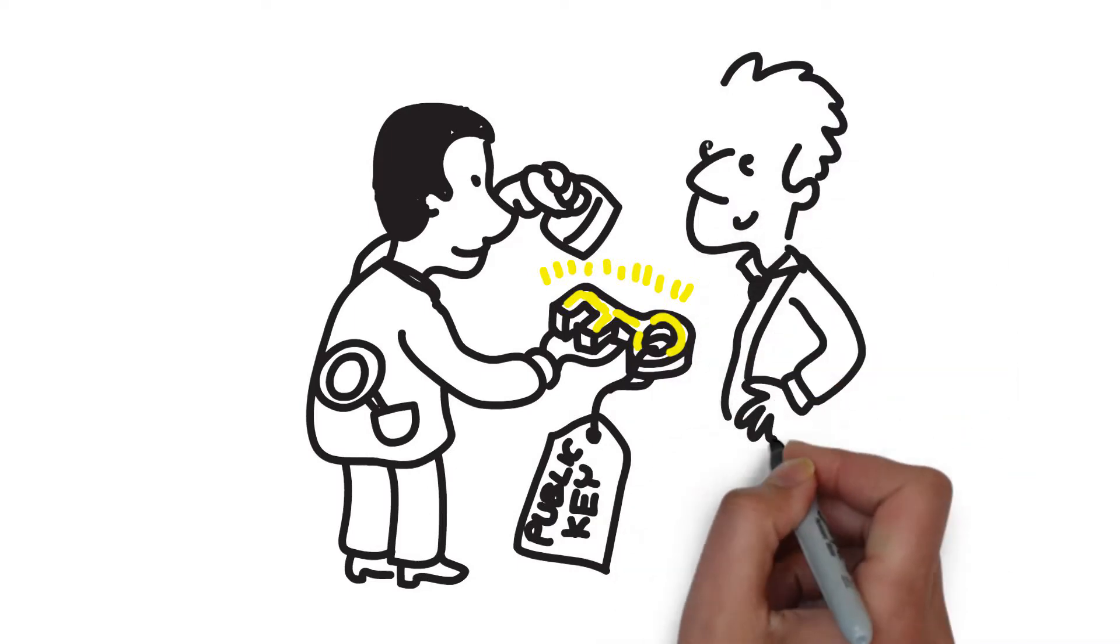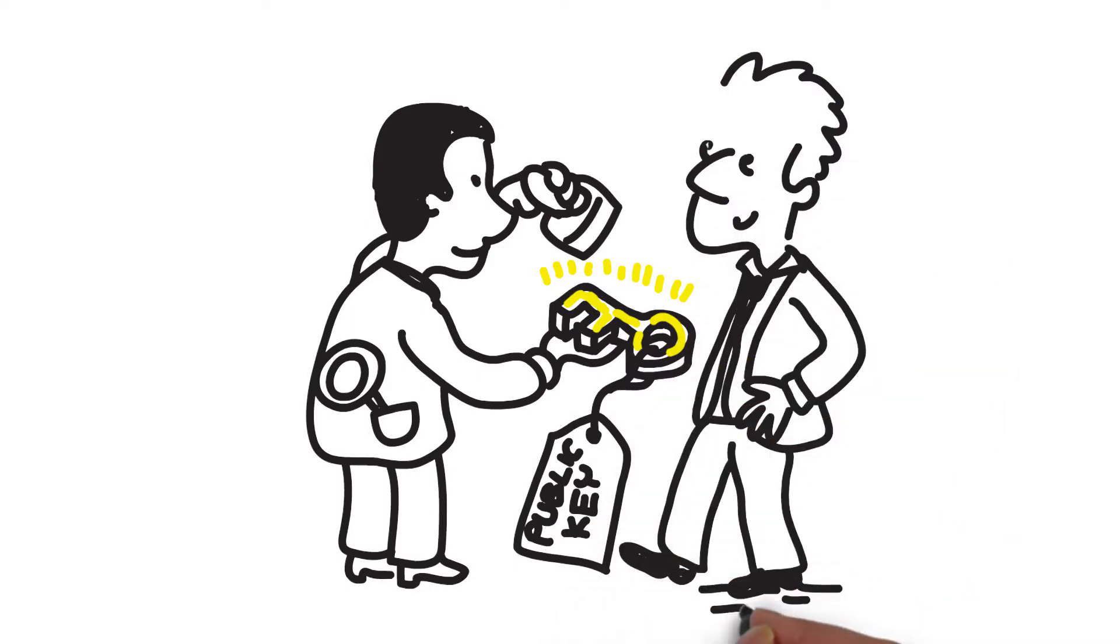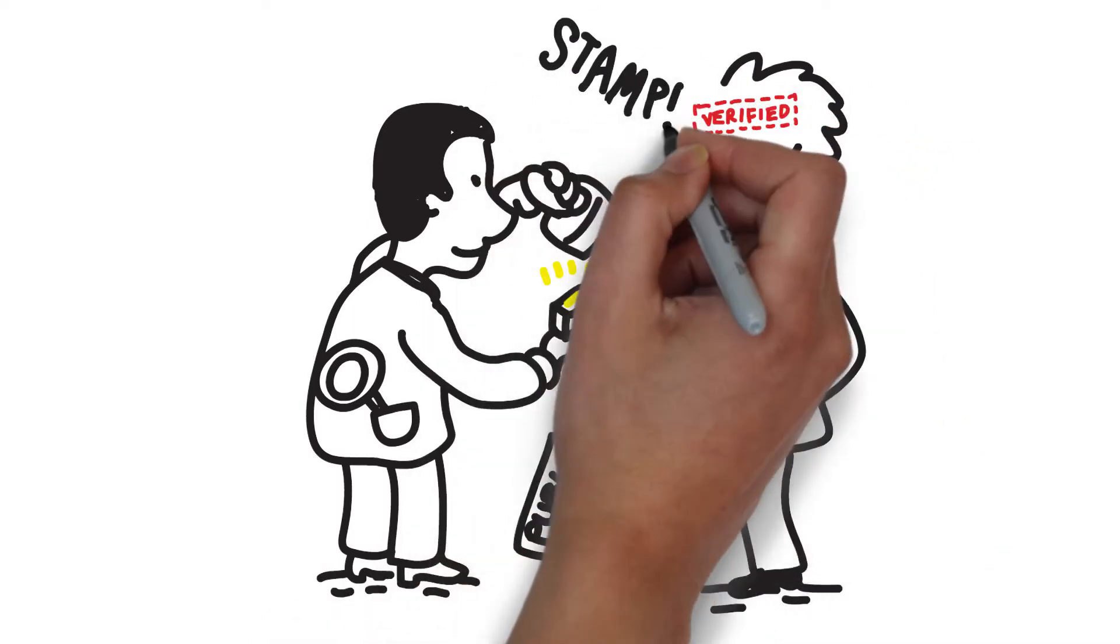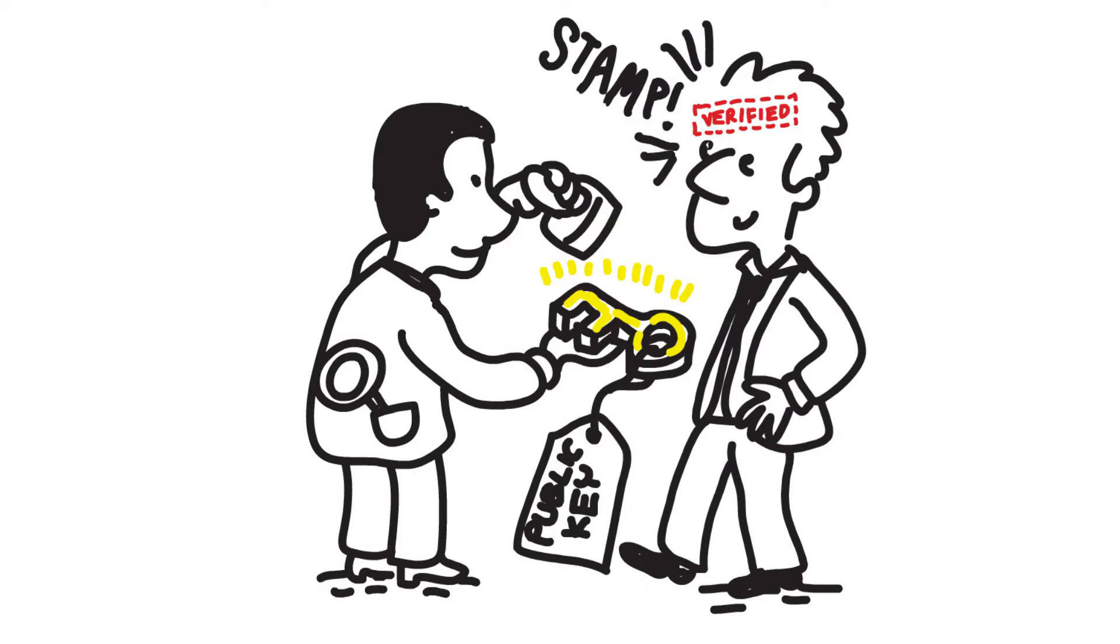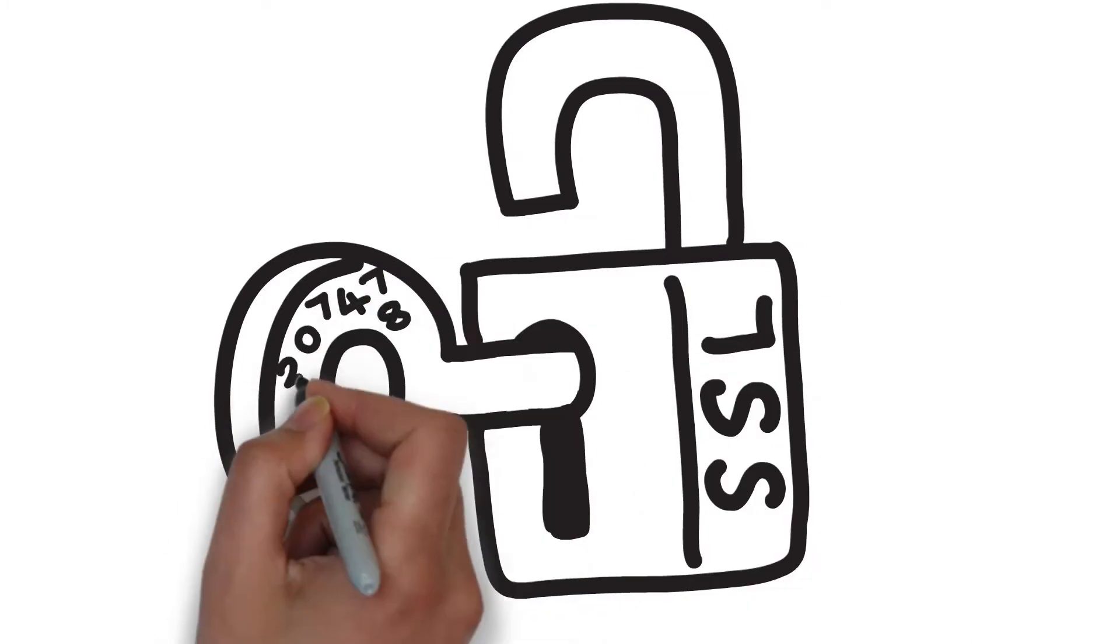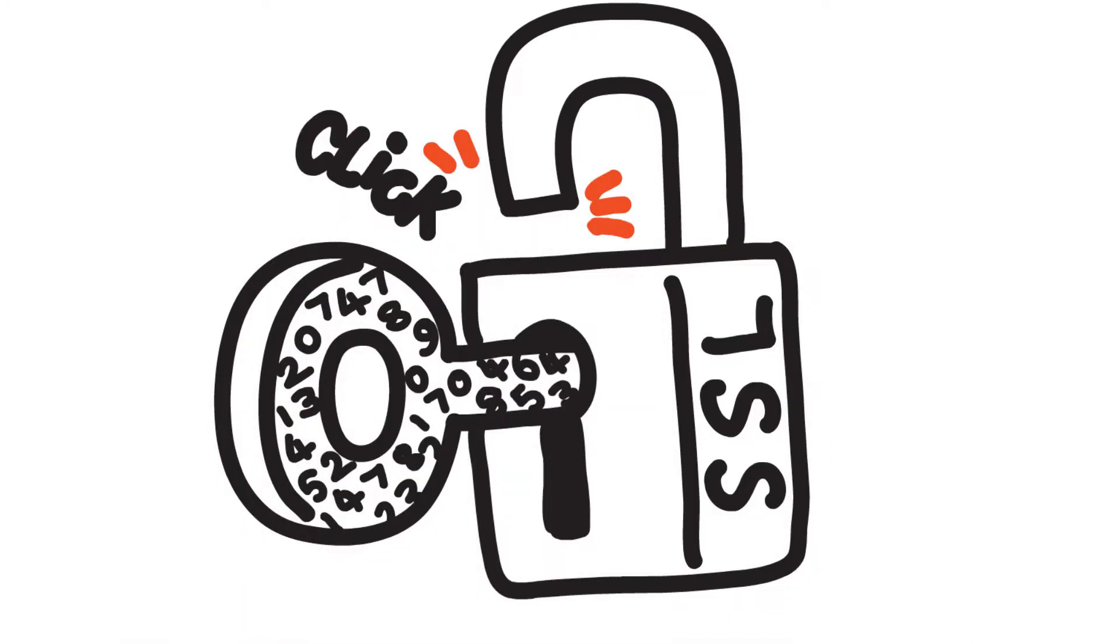A key in encryption terms is essentially just a prime number. For those who missed that class, a prime number is one that is only wholly divisible by itself and one. This public key is the key to the whole SSL process.